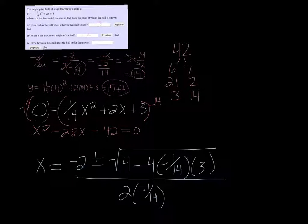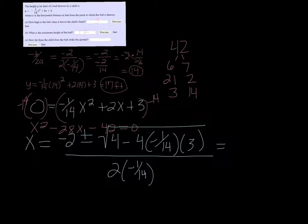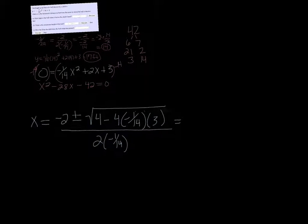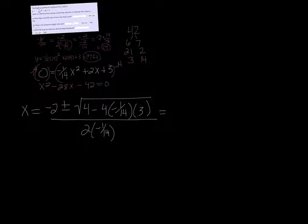Okay, so we're going to simplify this a little at a time. Leave myself lots of room here. So that's going to equal negative 2 plus or minus the square root. Let's see if we can clean this up. 4 minus, well it's actually going to be plus, but 4 times negative 1 divided by 14 times 3.